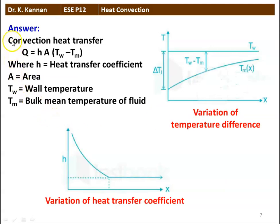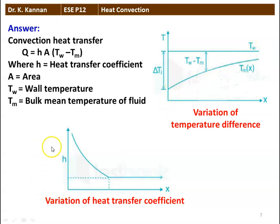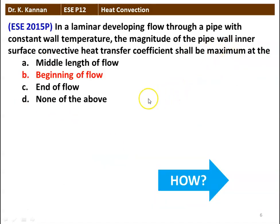For convection heat transfer, Q = h*A*(Tw - Tm). The wall temperature remains constant while the mean fluid temperature increases along the flow length, so delta T is higher at the entrance and decreases in the direction of flow. Accordingly, the heat transfer coefficient is initially higher, then decreases and remains constant in the flow direction. Therefore, the convection heat transfer coefficient is maximum at the beginning of the flow.